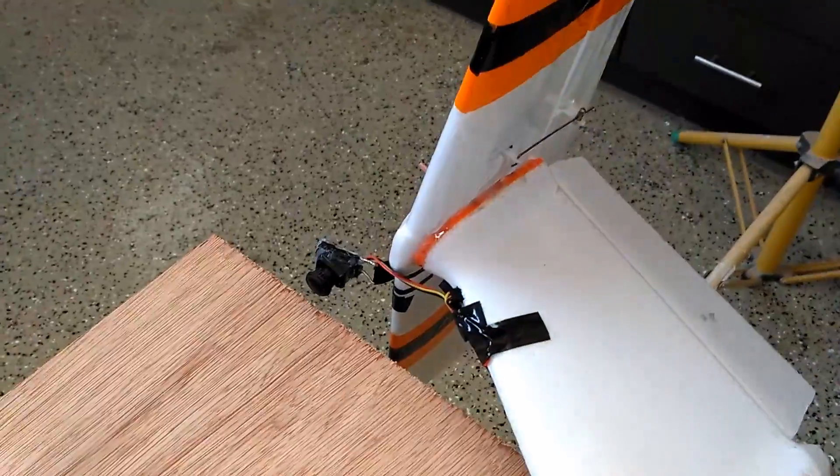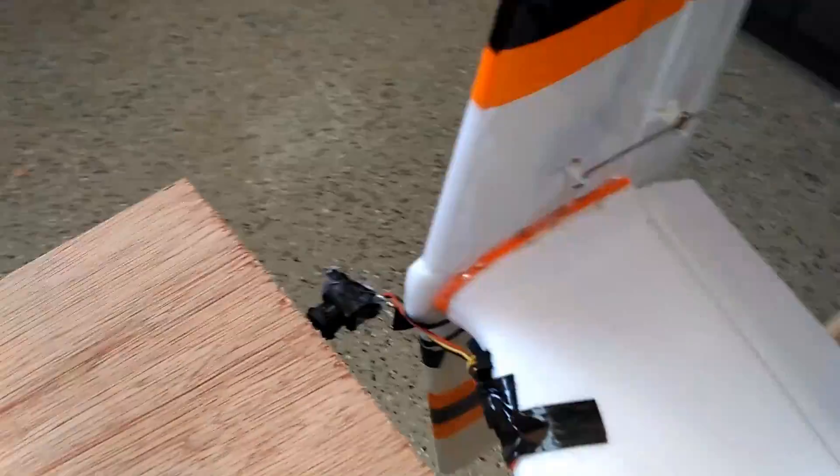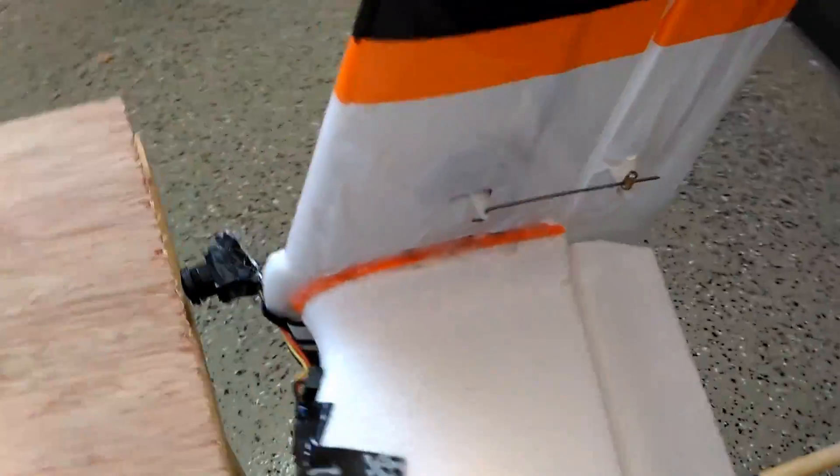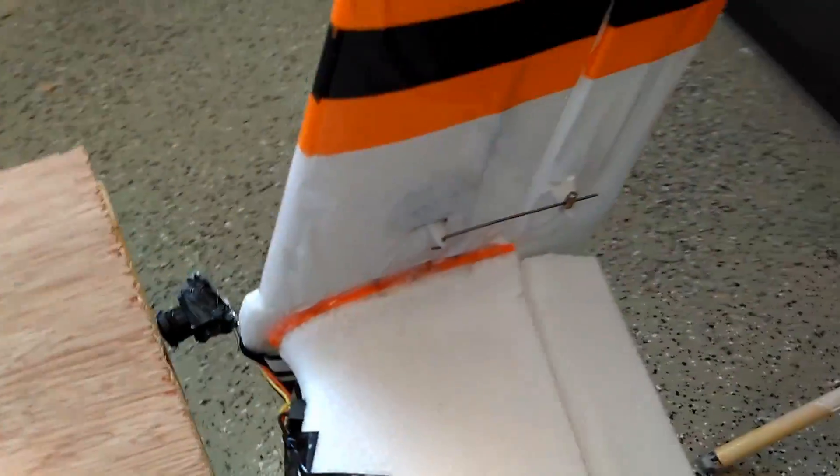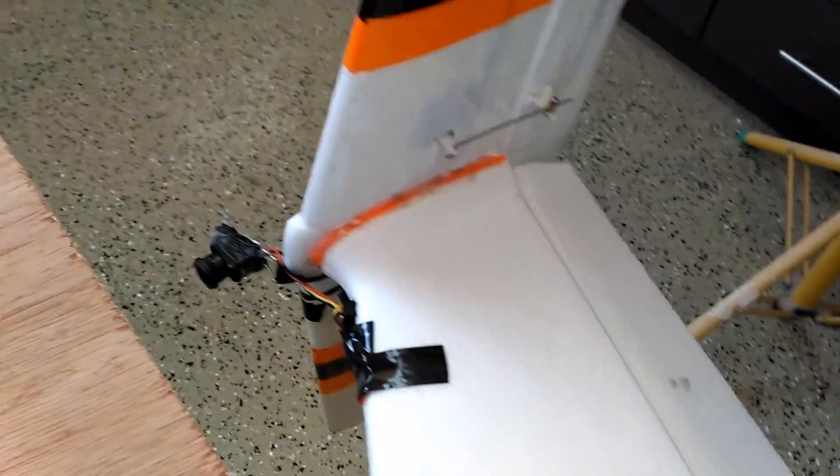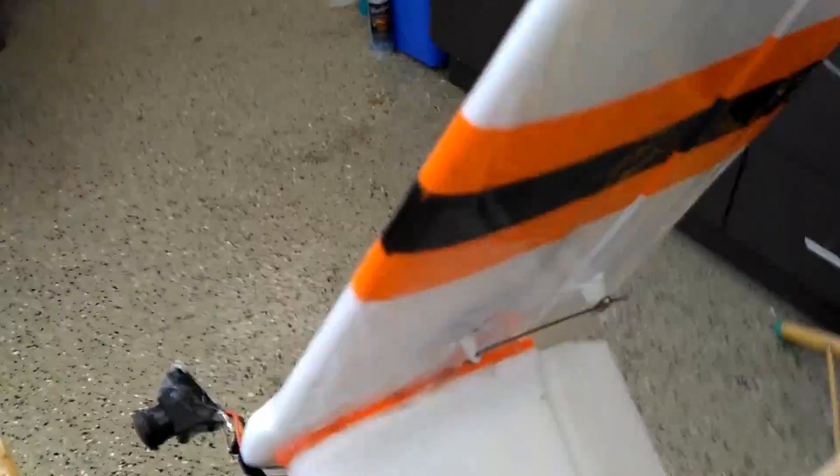Modifications I did to the tail. So I set it up so that the tail is just one piece. This is all glued together and does not come apart. I added a second servo to do elevator. So there's one on this side. There's also one on that side.